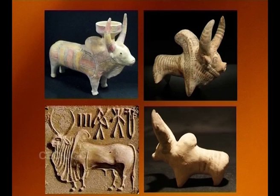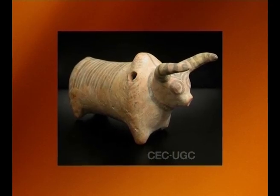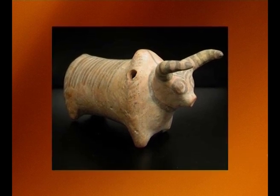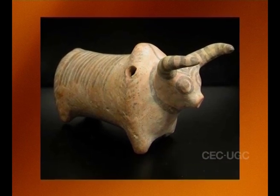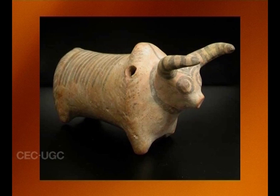Hello viewers. The main objective of this lecture is to throw light on some of the images of bull, the Vahana of Shiva in Indian art. These images are preserved in the museums and art galleries in India and abroad. In my previous lecture, I talked about bull in ancient Indian texts. Now I will throw light on how the artists followed them and sometimes used their imagination in depicting this auspicious animal.